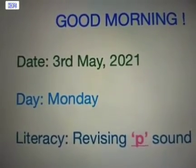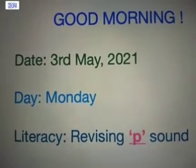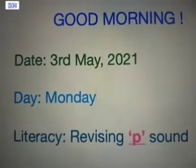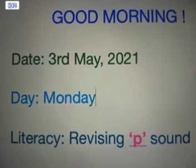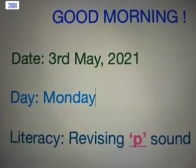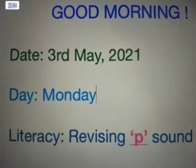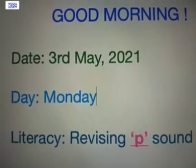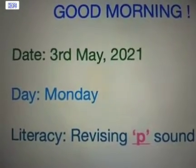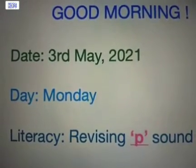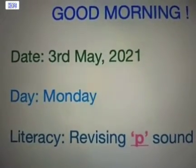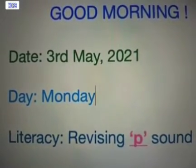Today's date is the 3rd of May and the year is 2021. So the month of April is over. Now we have started with a fresh month and the name of the month is May.